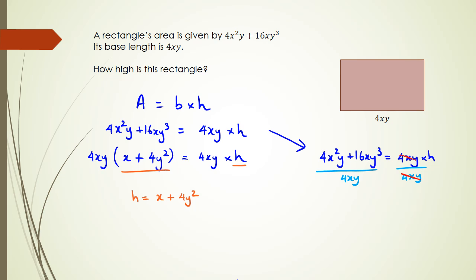So that way they cancel out here and all I have left over is h equals 4x²y divided by 4xy plus 16xy³ divided by 4xy.